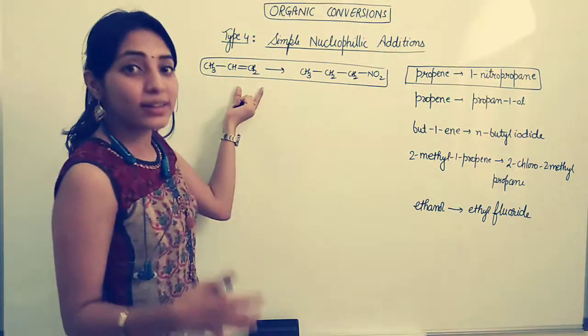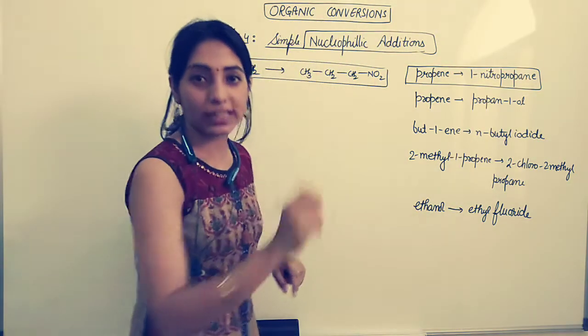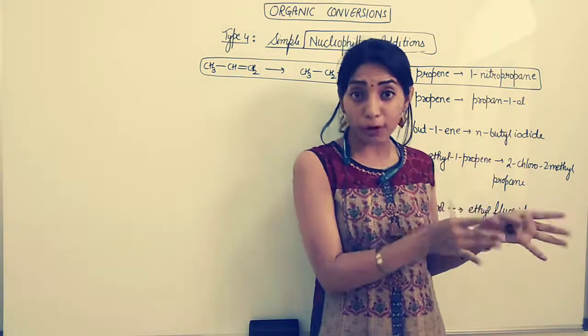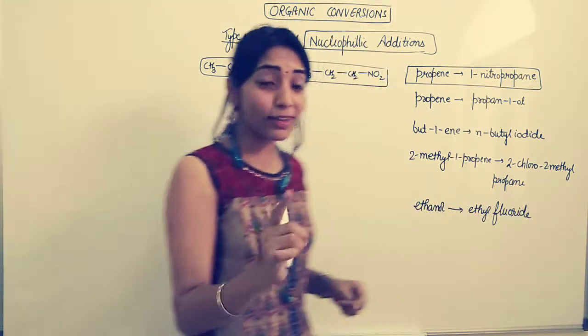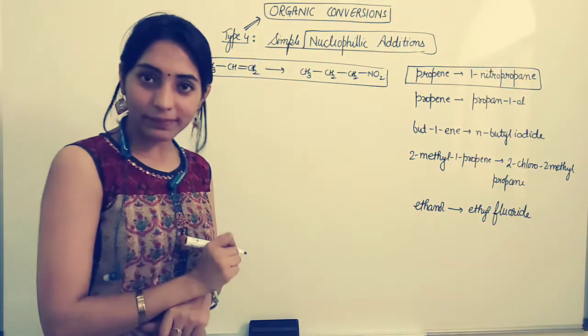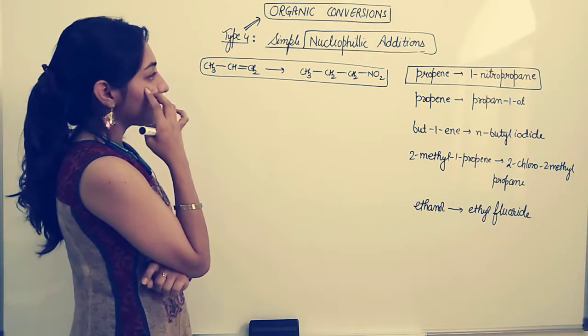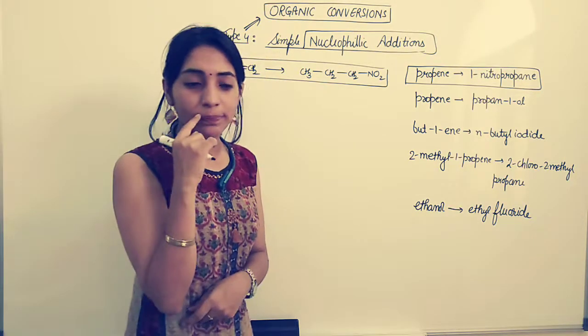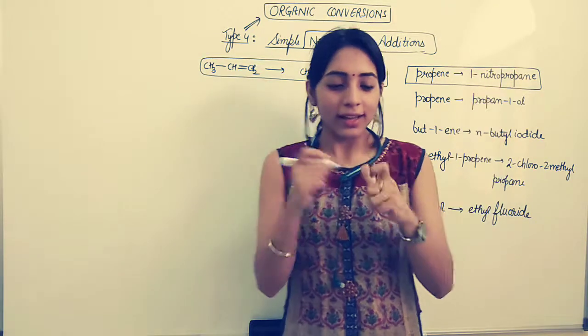So whenever there is double bond in the reactant, but you do not see that double bond in the product side or there is a triple bond in the reactant you do not see in the product, that means we have to go to type 4, nucleophilic addition reactions. Now how to do that? I am thinking, we can never add I directly. We cannot introduce NO2 directly.